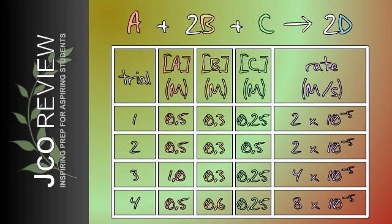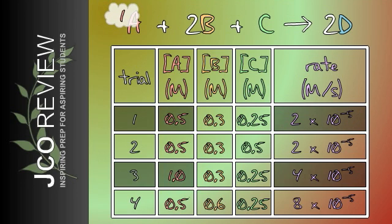First, find two trials in which only one reactant's concentration is altered. So, see trials 1 and 3 here. For these two reactions, the concentrations of B and C are the same, but reactant A's concentration is doubled. If we compare the initial rates of these two reactions, we see that it also doubled. Since a doubling of A's concentration doubled the initial rate of reaction, we say that A is a first-order reactant.